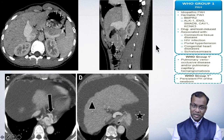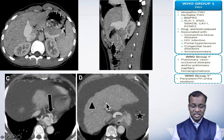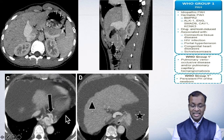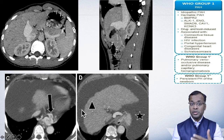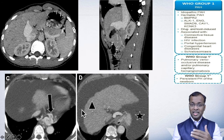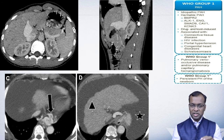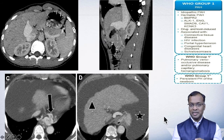Another cause is portal hypertension as part of chronic liver disease, with varices and extensive ascites visible on CT. This can also lead to pulmonary hypertension. CT is fantastic at picking these findings.